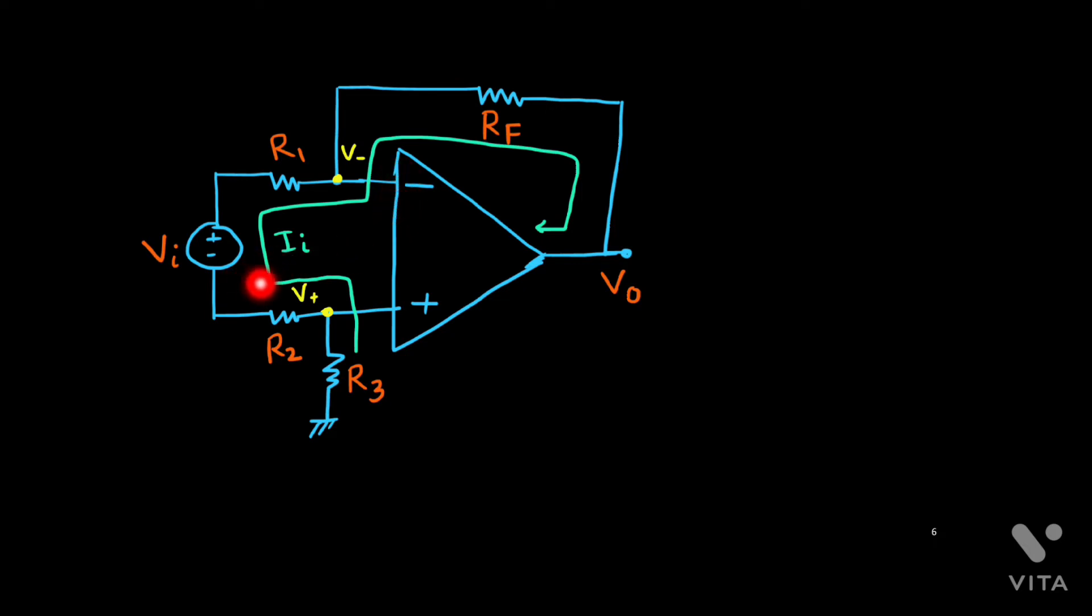So whatever current is supplied by the source, if it is ii, that has to come from this side, and it will follow this path. Because no current is here, no branching is here, no branching is here. So this is the current flow. The same current is flowing ii through this circuit.